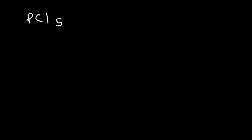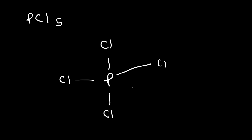A good example of the trigonal bipyramidal structure is PCl5, phosphorus pentachloride. In this structure, phosphorus is at the center, with two chlorine atoms in the Z direction and three chlorine atoms in the XY plane. Each chlorine atom contains three lone pairs, so the total number of valence electrons in this structure is 40.